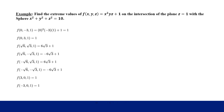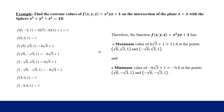Now we have our complete list of candidate points found using the Lagrange multipliers method. We plug each point into the original function and compare values. After evaluating, many outputs repeat. The largest function value is 6√3 + 1, giving a maximum of approximately 11.4 at two separate points. The smallest value is −6√3 + 1, giving a minimum of approximately −9.4, also occurring at two different points.